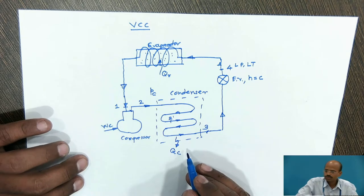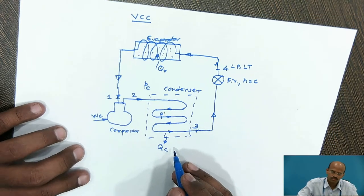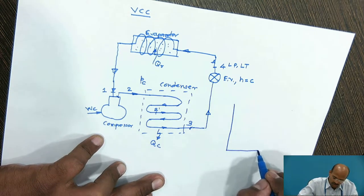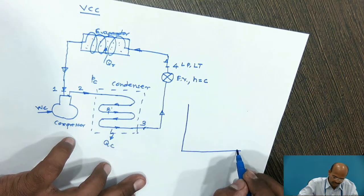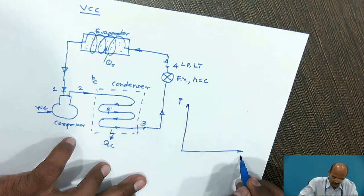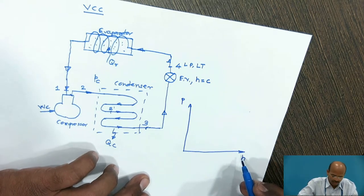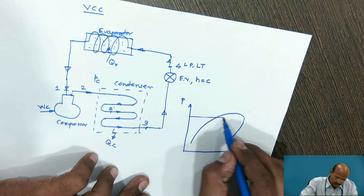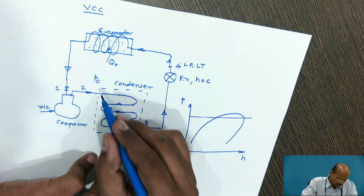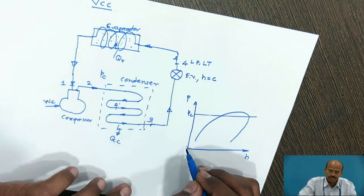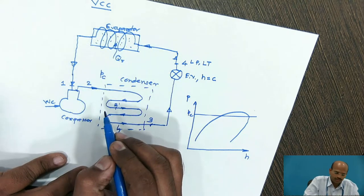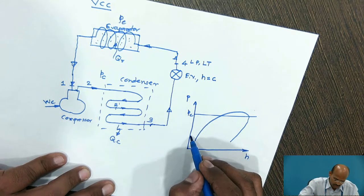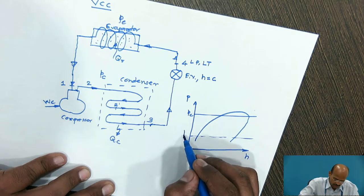Now we will move to the pH diagram — pressure versus enthalpy — because it becomes very easy to plot this cycle on pressure versus enthalpy axes. The diagram has a saturated curve. The high pressure is the condenser pressure PC, and the pressure in the evaporator is low, denoted as evaporator pressure PE.